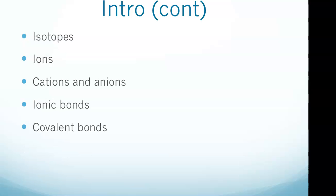Isotopes are variants of a particular chemical element which differ in neutron number. All isotopes of a given element have the same number of protons in each atom. The meaning behind the name is that different isotopes of a single element occupy the same position on the periodic table.